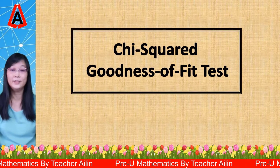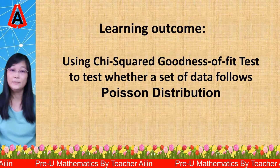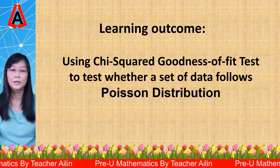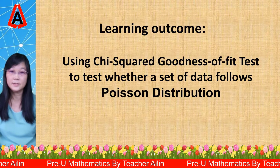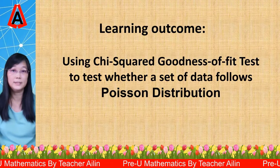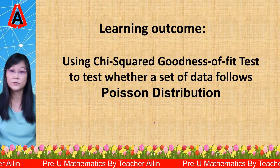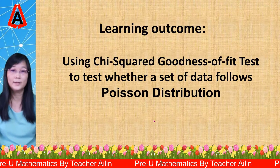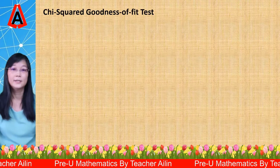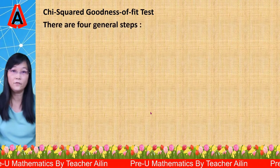In this video, I'm going to talk about chi-square goodness of fit test. I have already shown you how to test a set of data using goodness of fit test for binomial distribution. Now today in this lesson, I'm going to show you how to test whether a set of data follows Poisson distribution. When carrying out a goodness of fit test, there are four general steps.